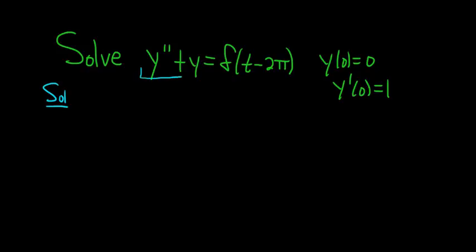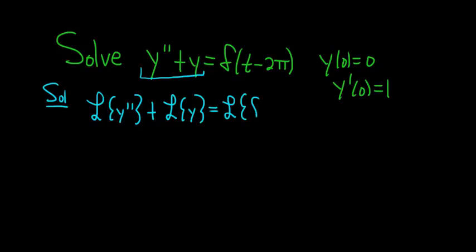When we take the Laplace transform of the left-hand side, we can distribute it through because it's linear. So this is the Laplace of y double prime plus the Laplace of y equals the Laplace of the Dirac delta function t minus 2π.